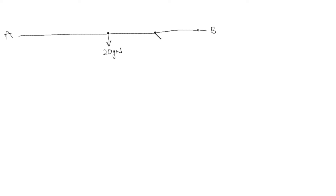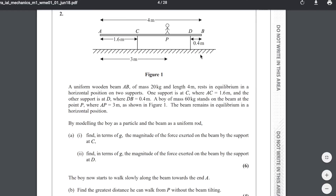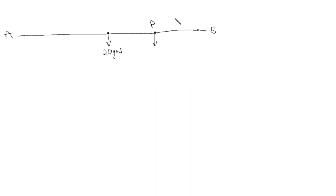Here I'm adding the mass of the uniform rod itself. Because it is uniform, the mass acts at the center of the rod, so the distance from A to the center is 2 m, and from the center to B is also 2 m. This is point P, where that boy is standing — 60 kg, so 60g newtons. I'm considering the weight, so I multiply the mass by g.